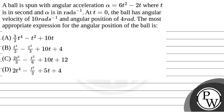Let's read the question. The question says that a ball is spun with angular acceleration alpha equal to 6t squared minus 2t, where t is in seconds and alpha is in radians per second squared. At t equal to 0, the ball has an angular velocity of 10 radians per second and an angular position of 4 radians. The most appropriate expression for the angular position of the ball is...